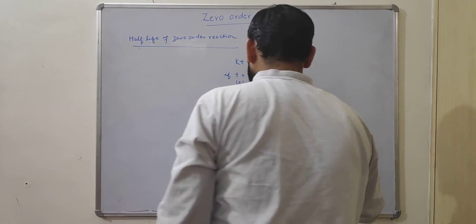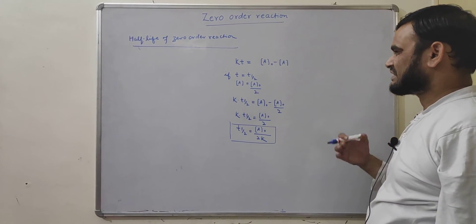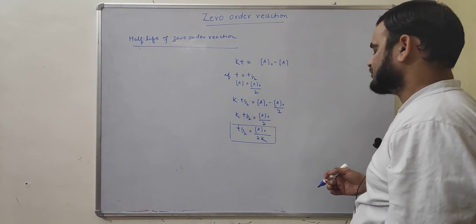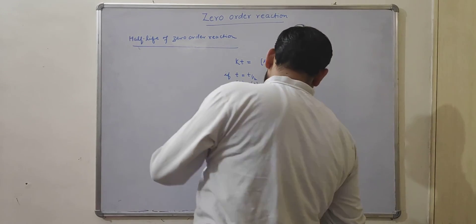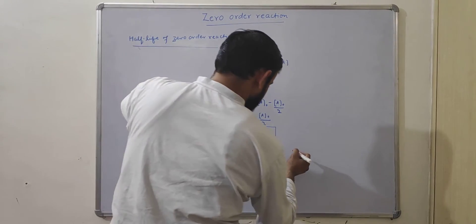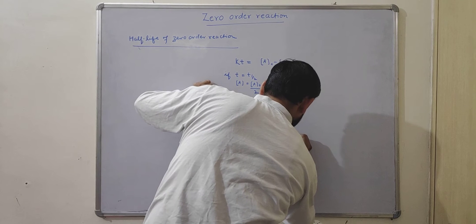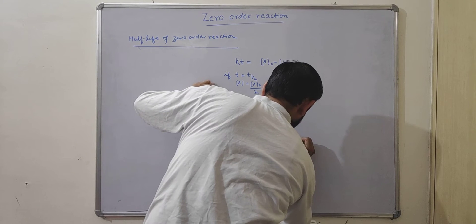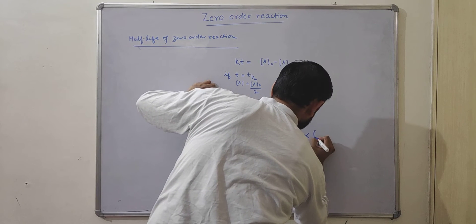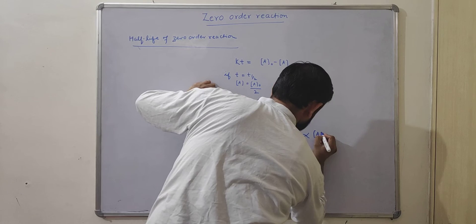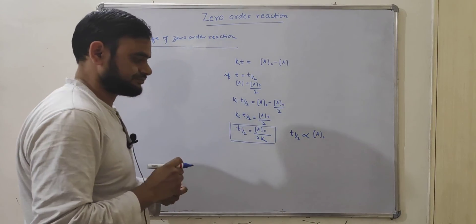So this is the equation for the half-life of a zero-order reaction. From this equation, we can see that the half-life of a zero-order reaction is directly proportional to the initial concentration of the reactant.